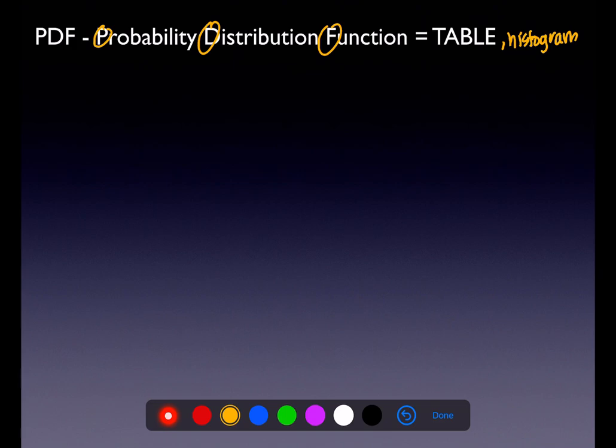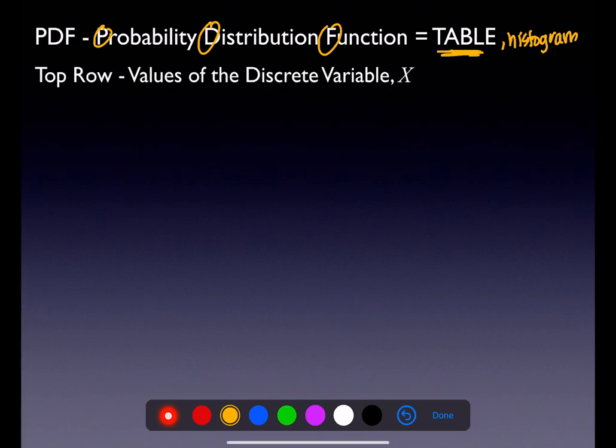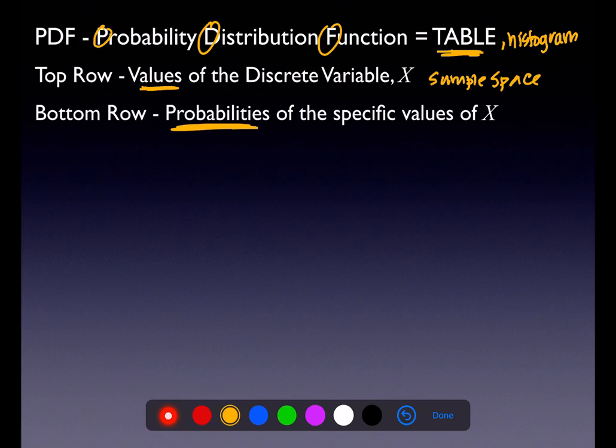A histogram is a graph, and those are probably the most common types — the table and the histogram. You could have a formula at times, but we're really going to stick to the table primarily. On your table, the top row always contains our sample space — the values of the variable x — so we list what is possible. The bottom row is what is probable.